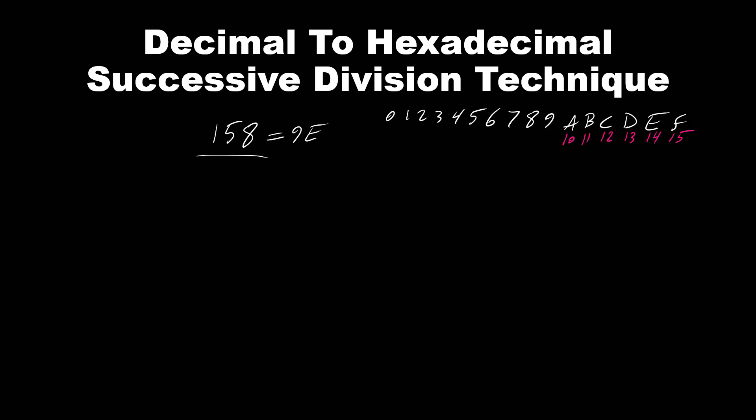What we need to do, we need to write 158 divided by 16, because hexadecimal number is base 16 system, which is 9.875. We need to find the remainder. So in order to get the remainder we just need to multiply 16 times 0.875, which is 14.